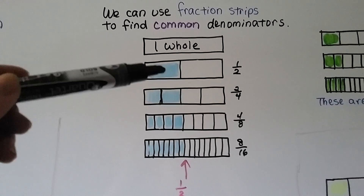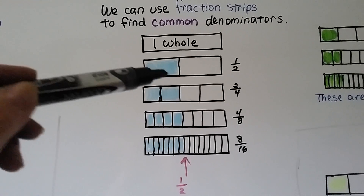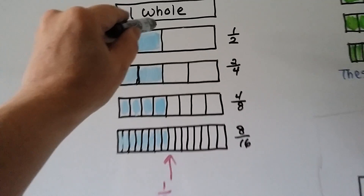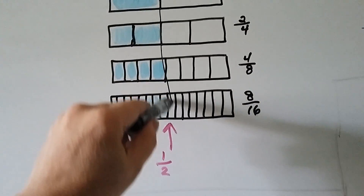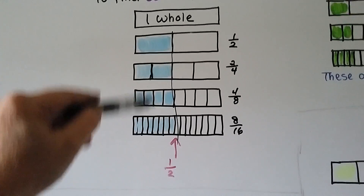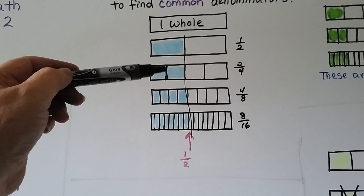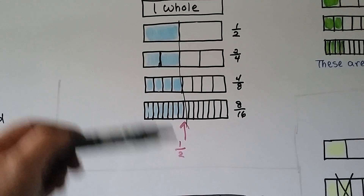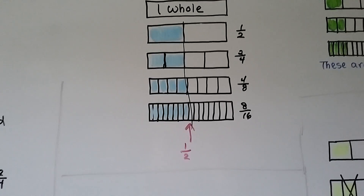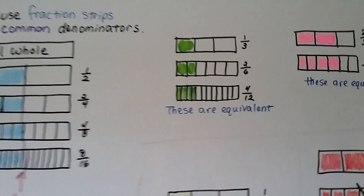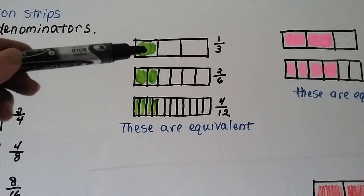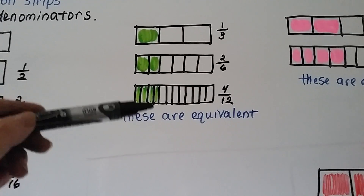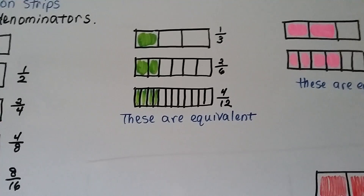This would be one whole, that would be a half, and all of these line up as a half coming down. So a half would be the same thing as two-fourths or four-eighths or eight-sixteenths. These are all equivalent. We have one-third of this bar filled out but it's the same amount as two-sixths or four-twelfths. They're all equivalent.